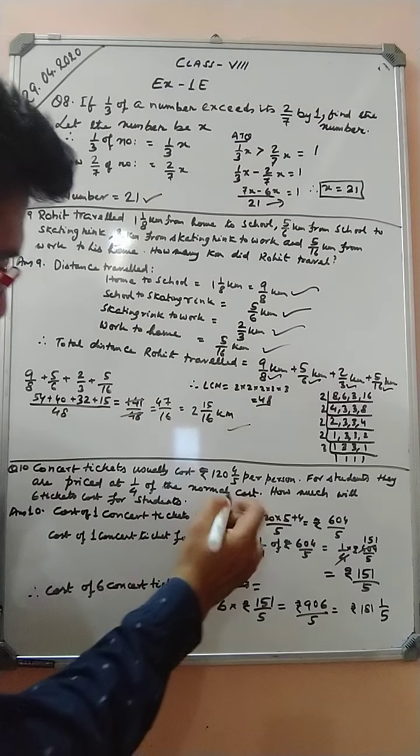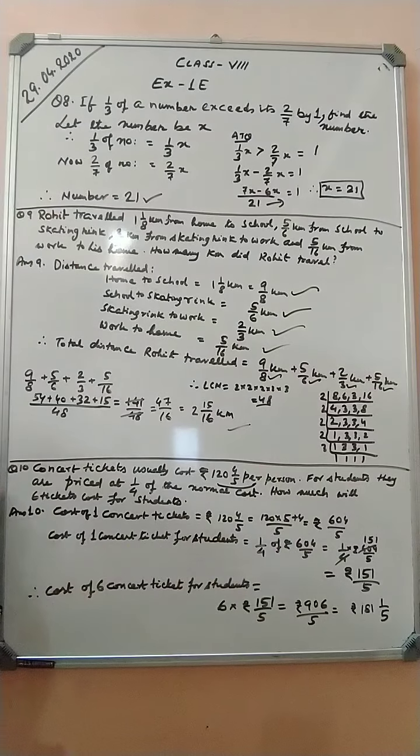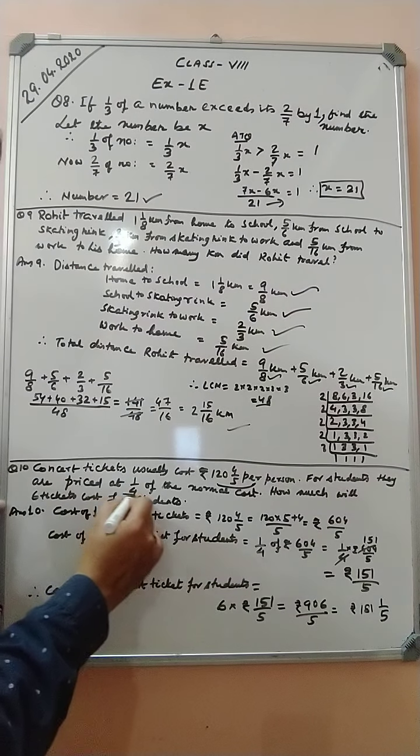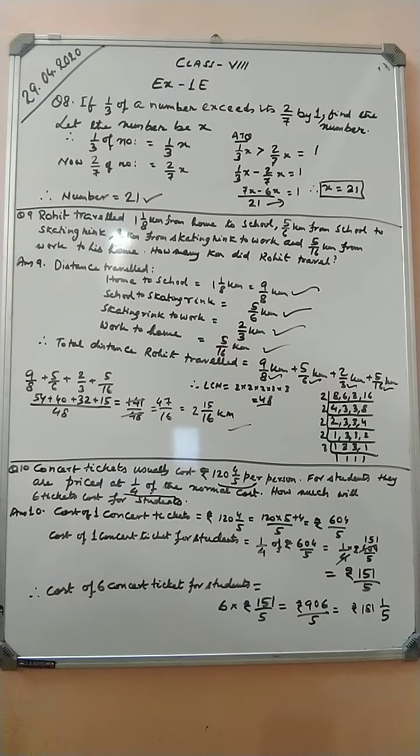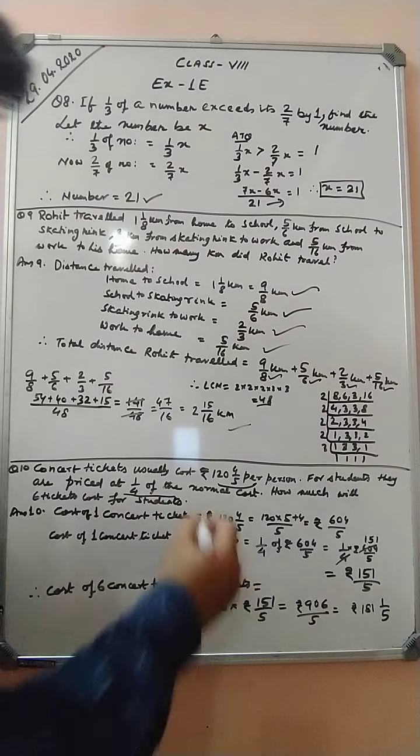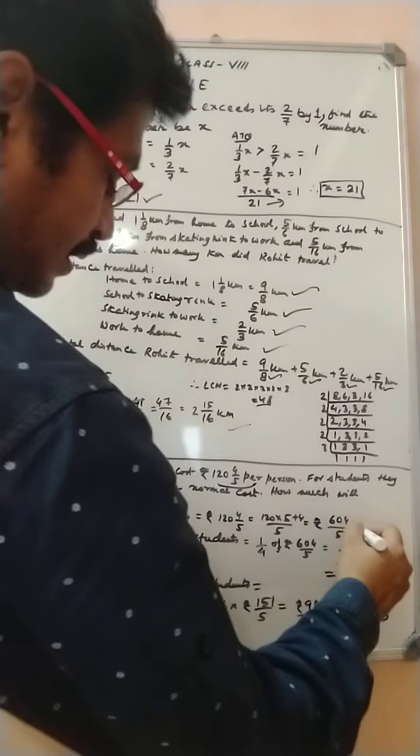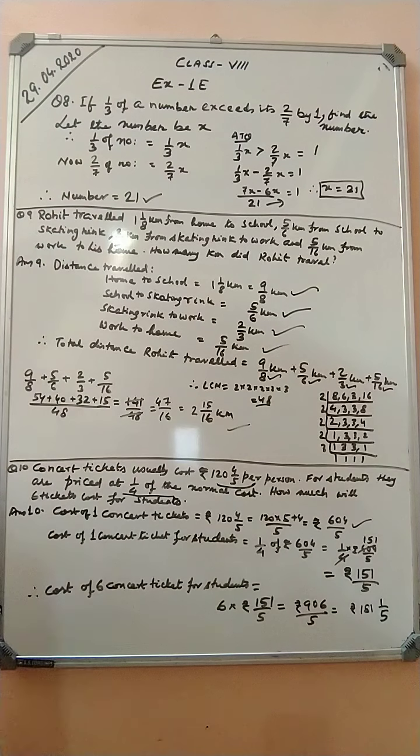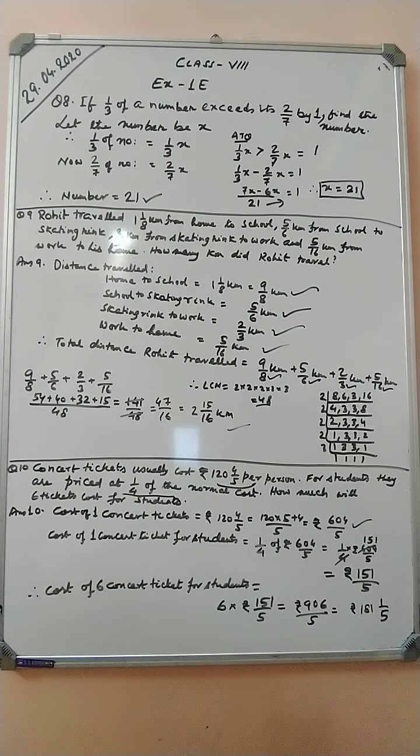I can say that if 8 is a number that exceeds 7 by 1, that means 8 is greater than 7 by 1. That means 8 minus 7 equal to 1. So this is the meaning of exceed. That means 1 by 3x is greater than 2 by 7x by 1. That means 1 by 3x minus 2 by 7x equal to 1.